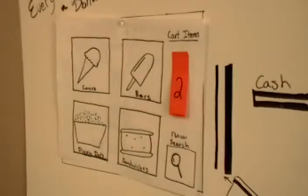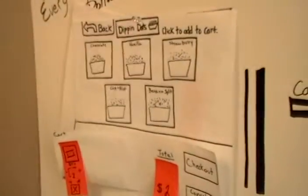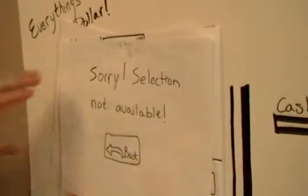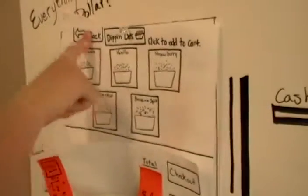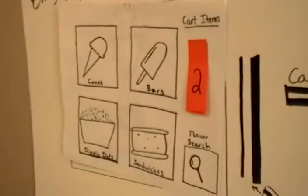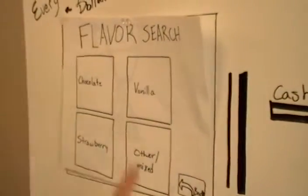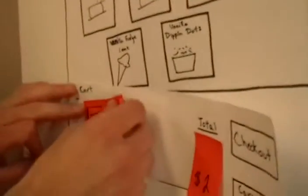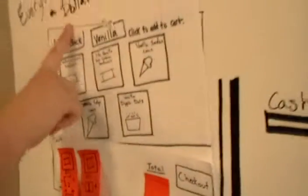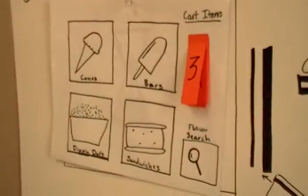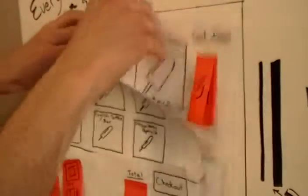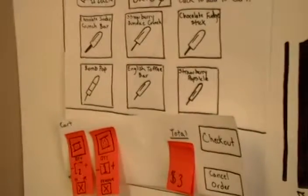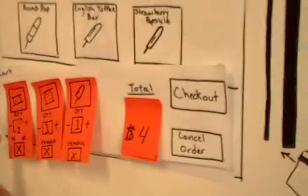And then I'll click back and go to Dippin' Dots. Click on vanilla. I'll click back. I'm gonna go back. I'm gonna use flavor search. I'm gonna click on vanilla. I'm gonna click on light vanilla ice cream sandwich. I'm gonna go back, go to bars, and then add a bomb pop. I'm gonna take off an ice cream sandwich.